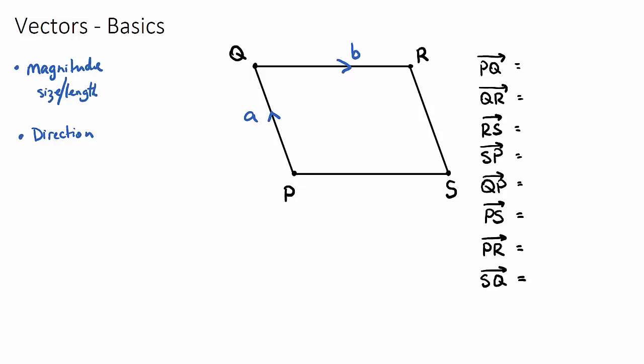If you want to go from P to Q, it is clearly defined as the vector A, so P to Q would just be A. If you want to go from Q all the way to R, it's clearly defined as the vector B, so that is just the vector B.